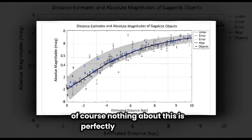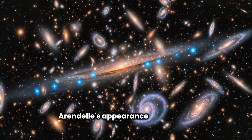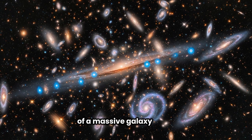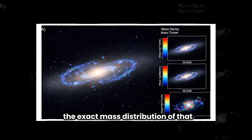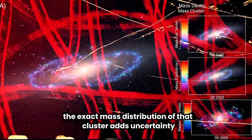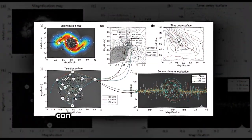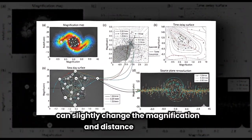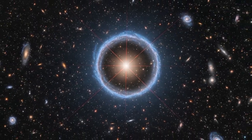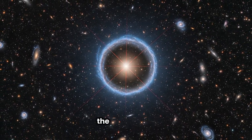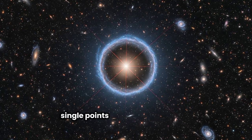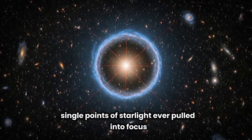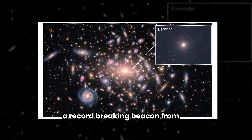Of course, nothing about this is perfectly straightforward. Earendel's appearance is shaped by the gravitational lensing of a massive galaxy cluster in the foreground. The exact mass distribution of that cluster adds uncertainty, and small shifts in the models can slightly change the magnification and distance estimates. But even with those caveats, the picture holds. We are looking at one of the farthest single points of starlight ever pulled into focus. A record-breaking beacon from the early universe.